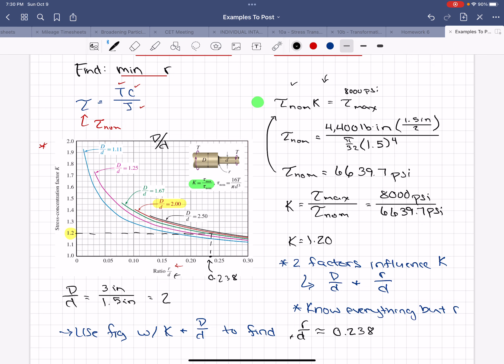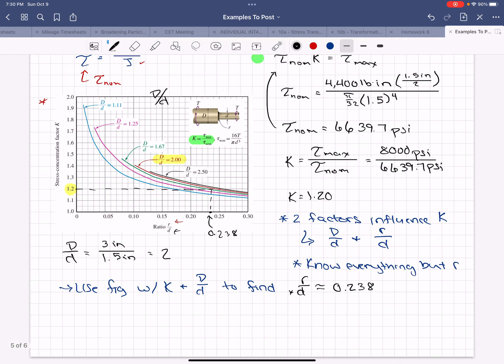We know little d, so now we can calculate r. So r equals 0.238 times little d, which equals 0.238 times 1.5 inches, and we get an r equal to 0.357 inches, and that is our final answer.